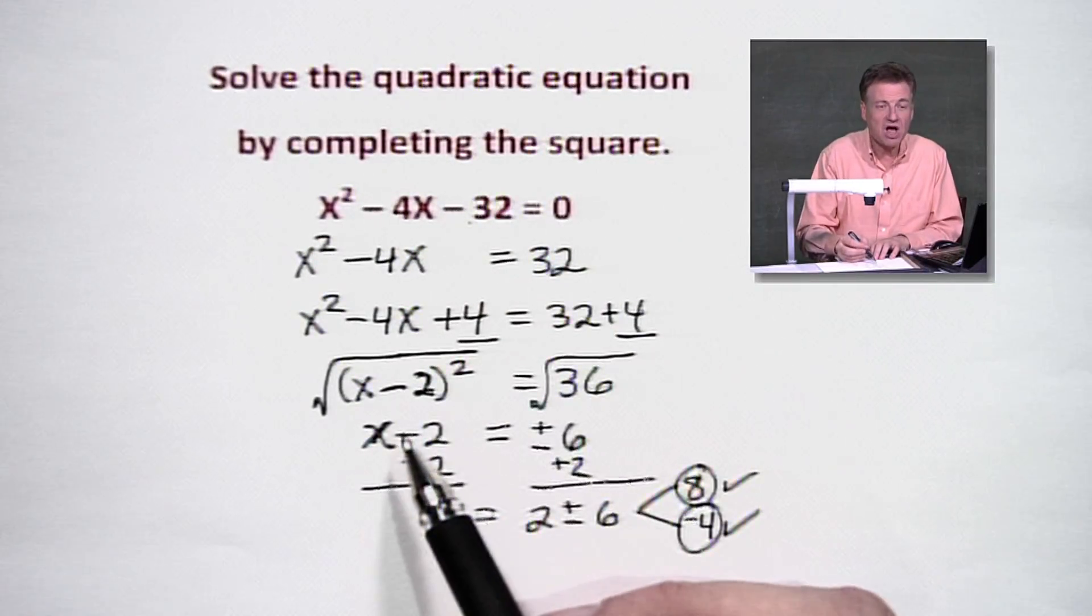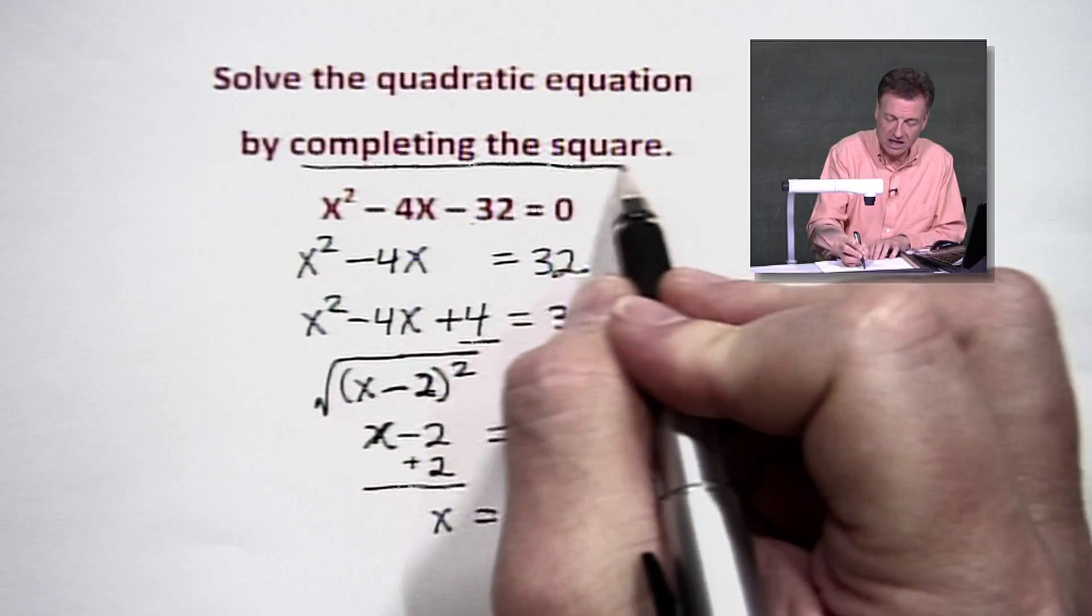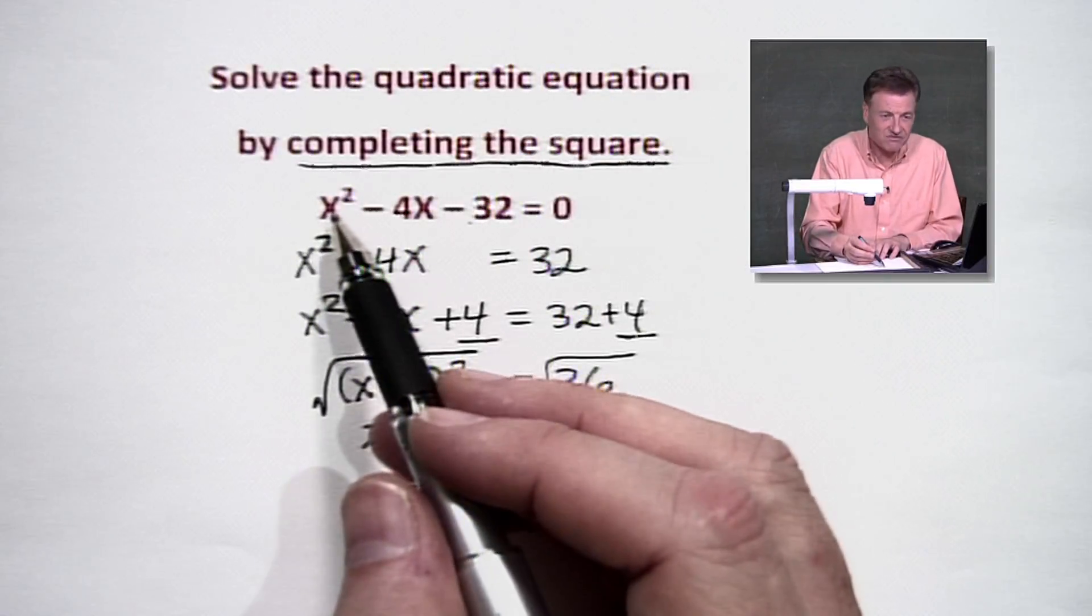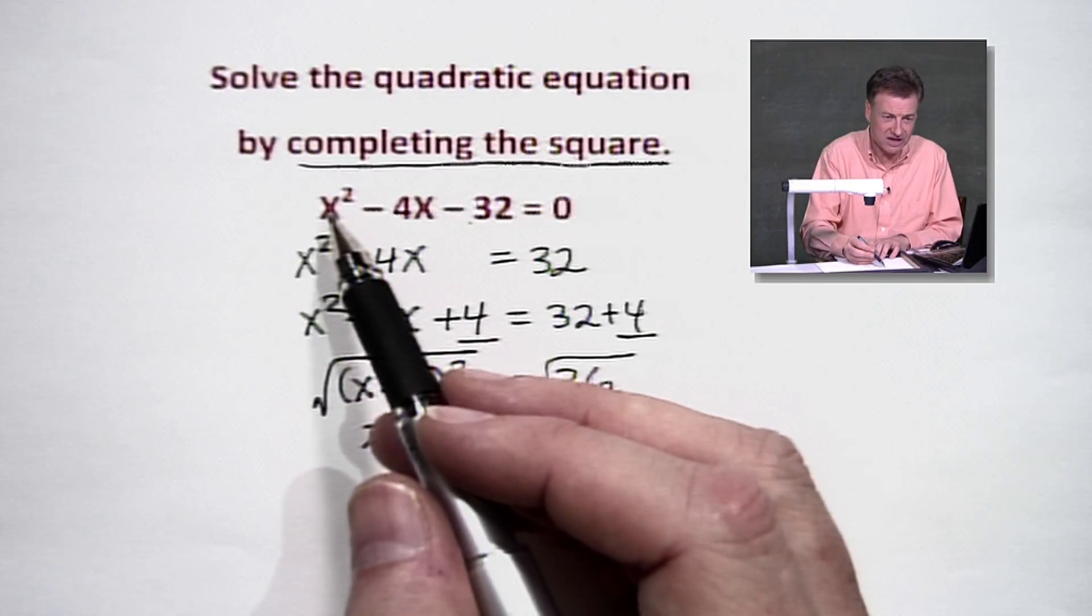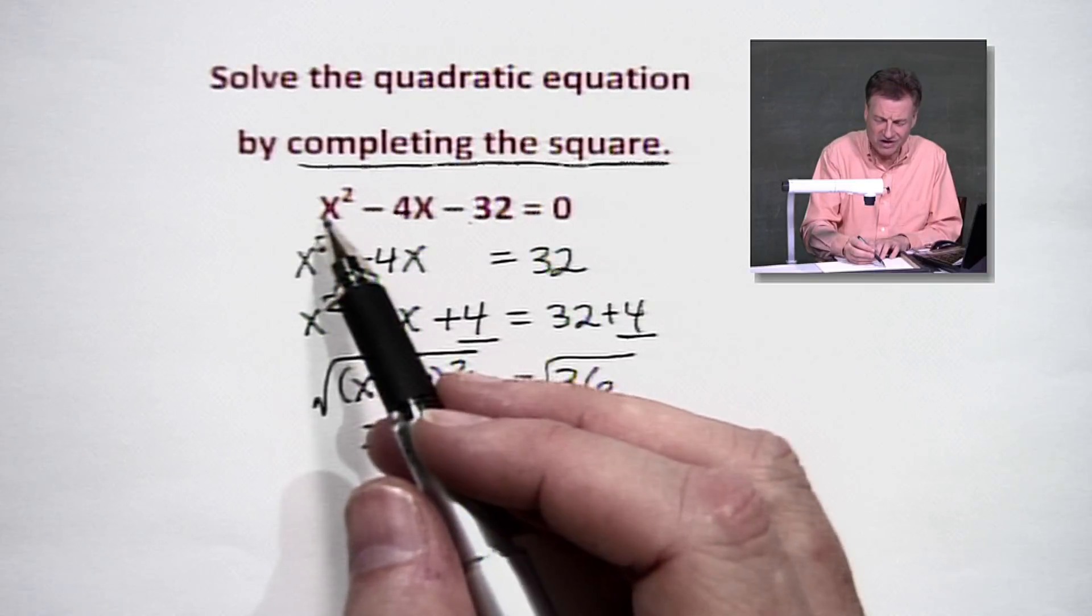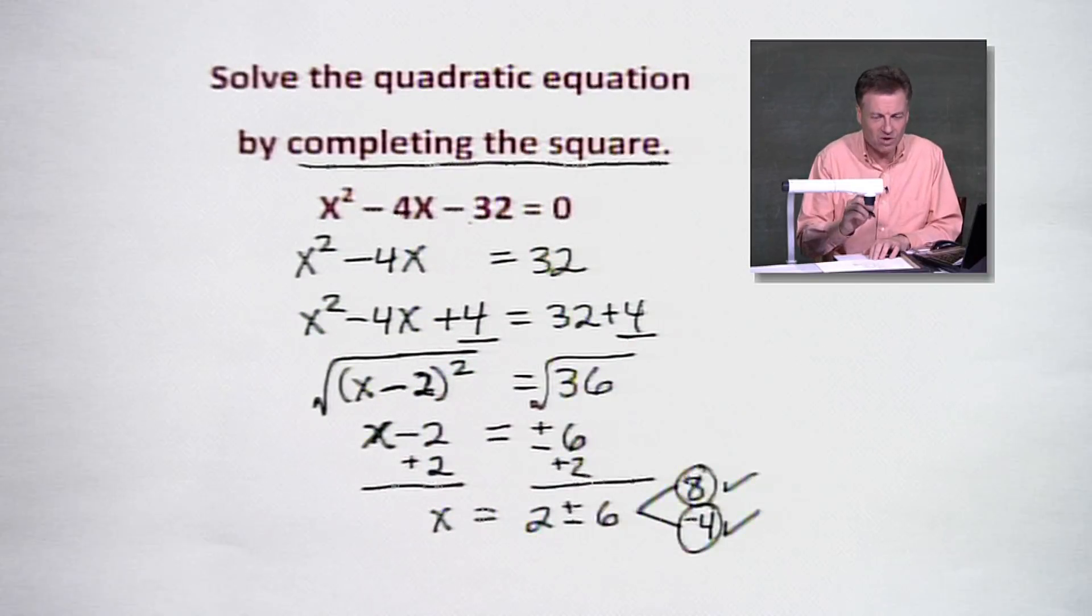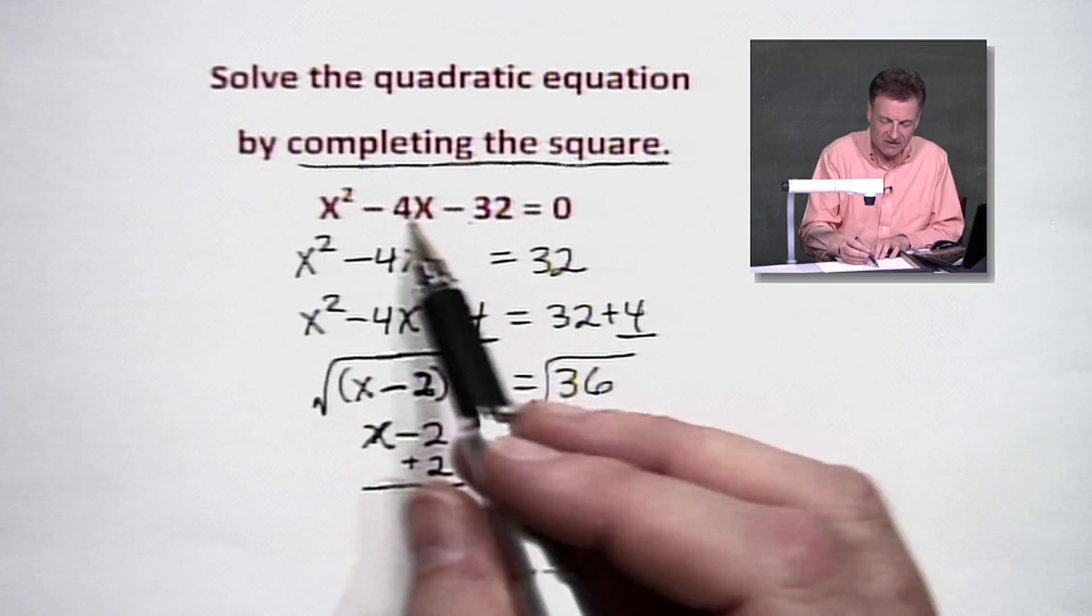And that's the process. That's what we call completing the square. Cool process. Sometimes it's a little more difficult. It's nice if you have x squared by itself. That's the only way you can do it. If you don't have x squared by itself, you've got to get that there. And you could have some strange numbers going on. But the way this one is working out for us, it worked really nicely.